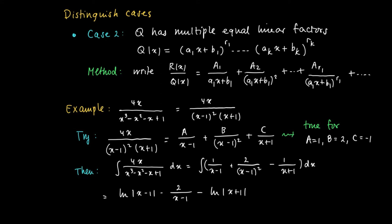And also, higher powers of the linear term are easily integrated. So 2/(x - 1)² has as primitive -2/(x - 1). And the final term, -1/(x + 1), has as a primitive -ln|x + 1|. And don't forget the integration constant.